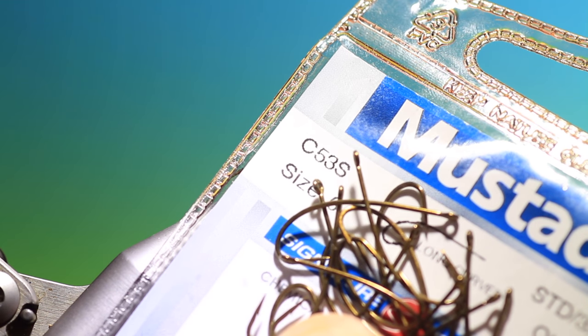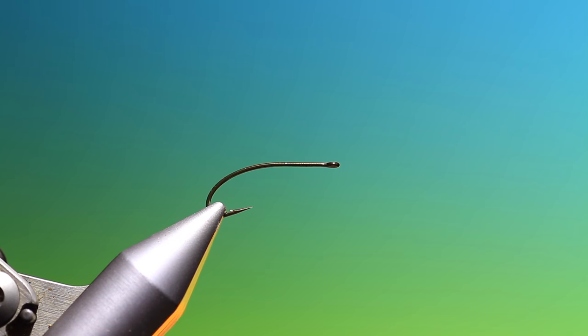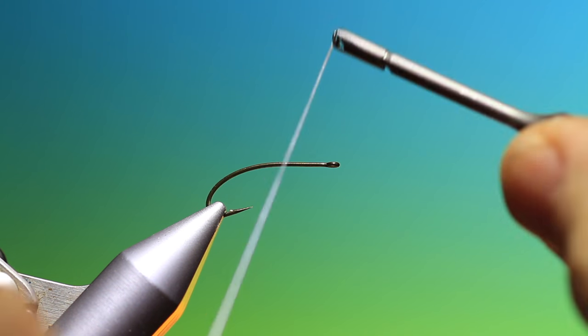This is a Mustard C53 curved terrestrial hook or curved nymph. This is my deer hair daddy long legs pattern.